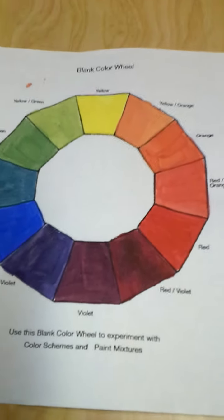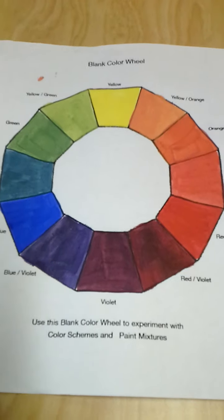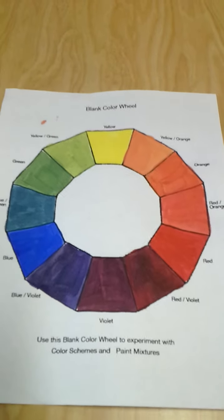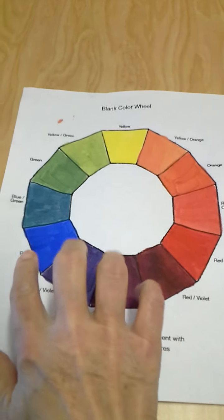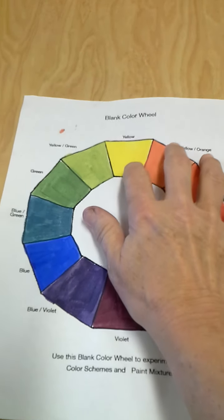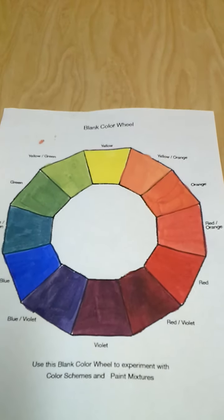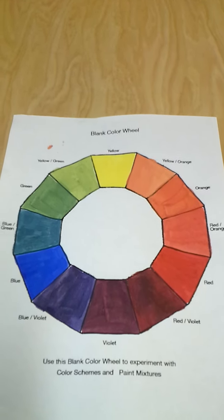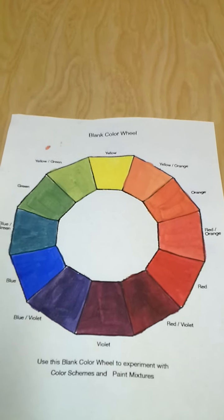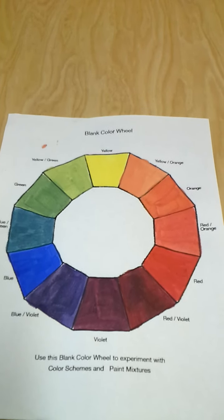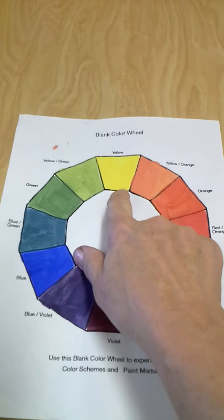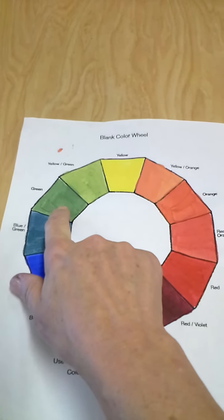Now I'm going to show you some examples of those definitions. The first one is a color wheel — this is what a color wheel typically looks like. On the color wheel you will find the primary colors: blue, red, and yellow. There are also secondary colors, which are the colors created from mixing two of your primary colors.